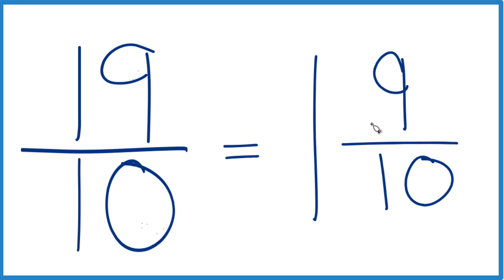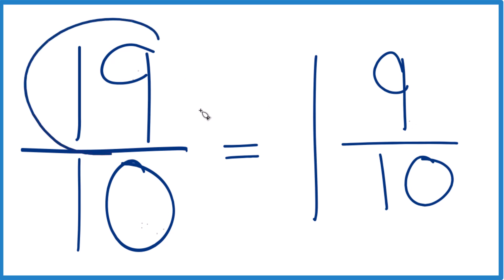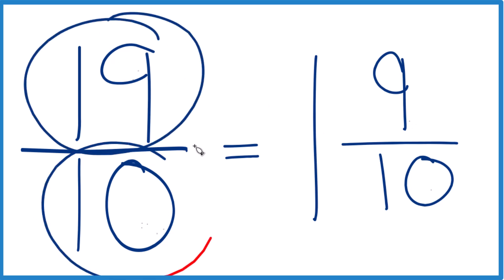You can check that too, because 1 times 10 is 10. 10 plus 9 is 19, and we keep the denominator the same. That's it.